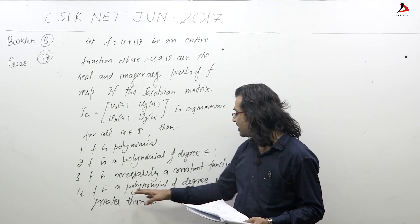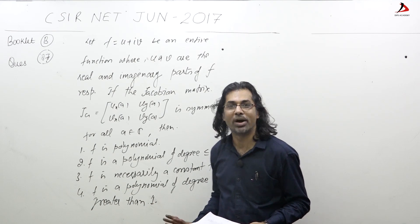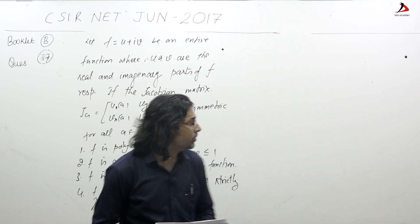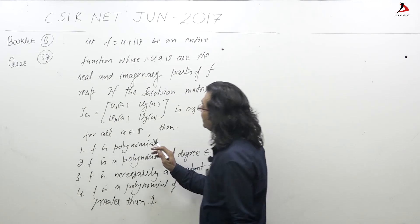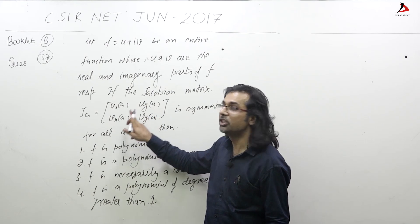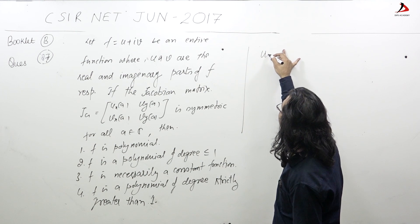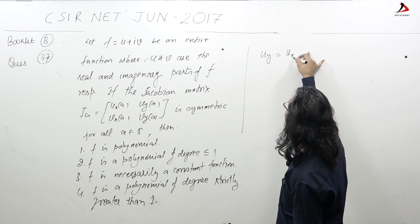Now the keyword of this question is this matrix is symmetric. Symmetric means this equals this: a_ij equals a_ji. So here, given u_y equals u_x for all a, I can write simply u_y equals u_x for all (x,y) belonging to R^2 or all a belonging to C.